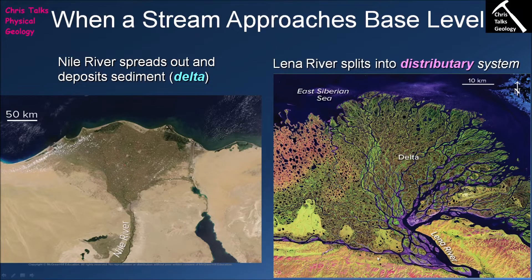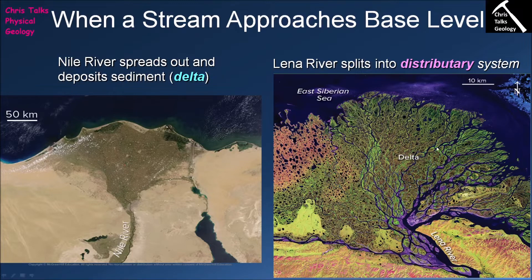The delta steadily builds up over time and actually becomes land in its own right — we can see this with the Nile delta. The river then cuts channels across the delta so that the water can reach our ocean, sea, or lake. These smaller channels are referred to as distributory channels because they distribute water across the delta. Over time, rivers continue depositing sediment along the edge of the delta, and given the right conditions the delta keeps building further out into open water.